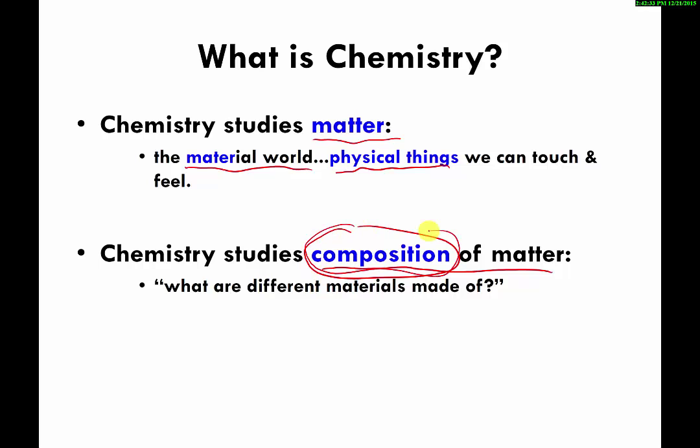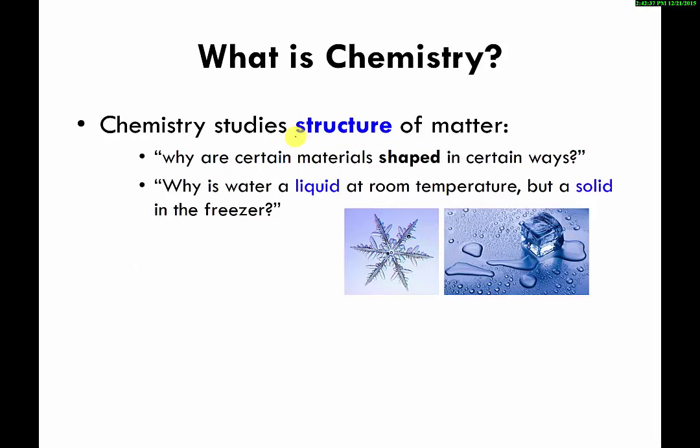Chemistry also studies the structure of matter. Structure is basically a fancy word that means how things are assembled or how things are shaped. So chemistry is interested in how material objects are put together, how they assume certain shapes. An example of that is with water. Water at very cold temperatures turns into a solid, so it's shaped in a certain way. If you warm it up, if you look at water under the conditions that we usually live at, water is a liquid.